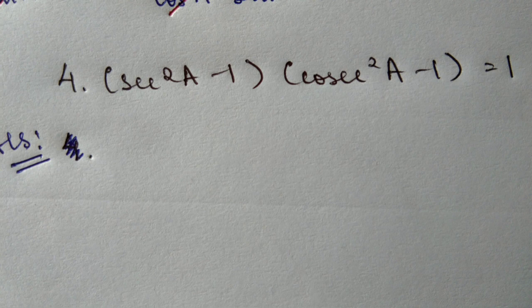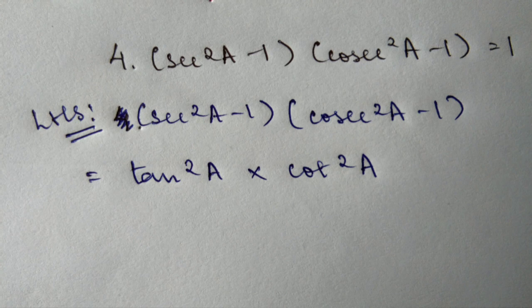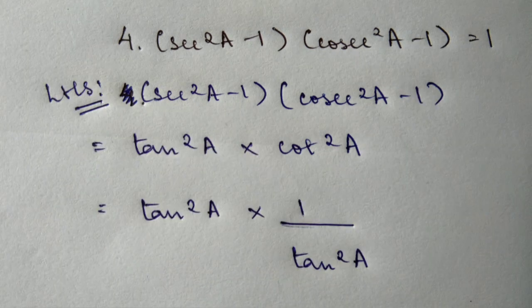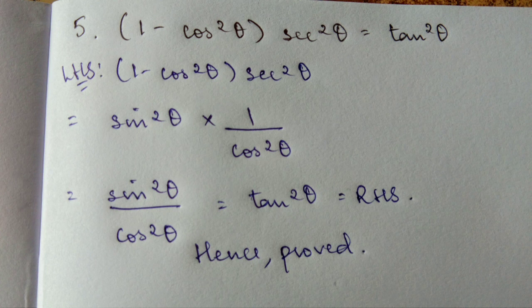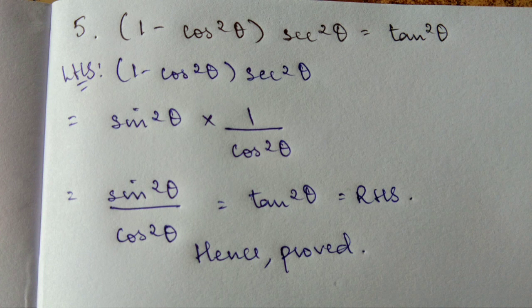In question number four, use direct substitution: cosec square A minus 1 equals cot square A, and tan and cot are reciprocals. Cancel out — cot square A cancels, giving tan square A, which equals the right-hand side, hence proved. In question number five, 1 minus cos square theta by direct substitution gives sine square theta. Cosec square cancels, giving sine square by cot square A, which equals tan square A — the right-hand side.